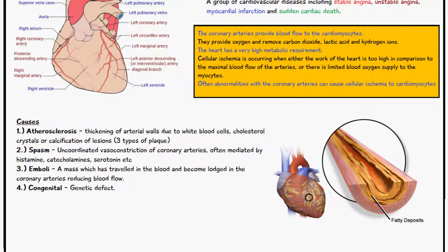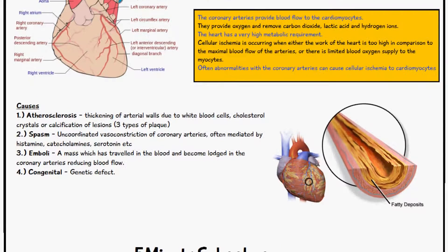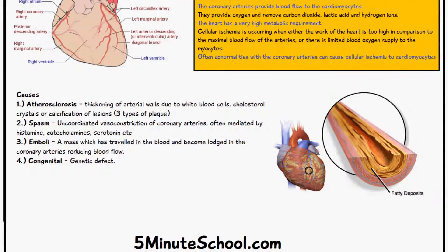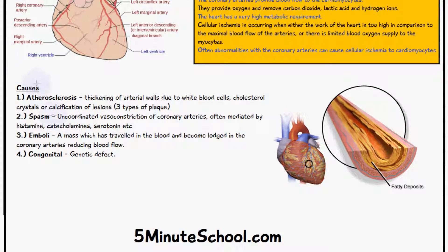Let's look at the causes of coronary artery disease. The first major one is atherosclerosis, where we have thickening of the arterial walls due to a type of plaque accumulation. There are three types of plaque, or it could be a combination: it's either made up of white blood cells, cholesterol crystals, or there's some type of calcification.